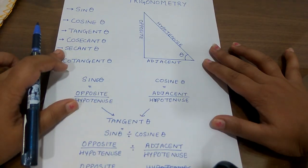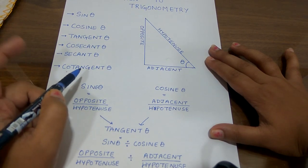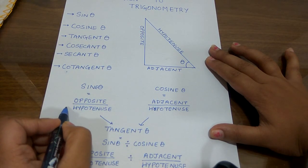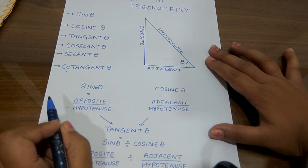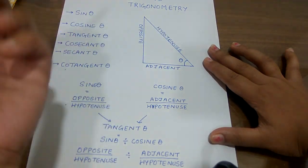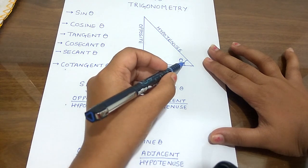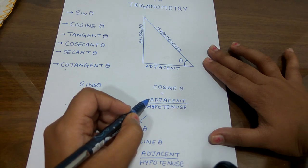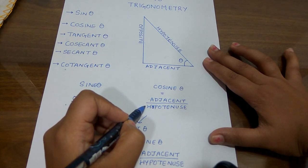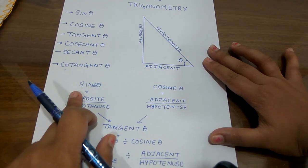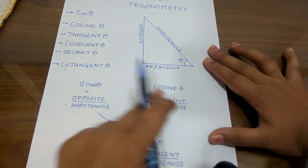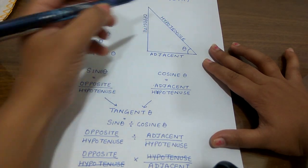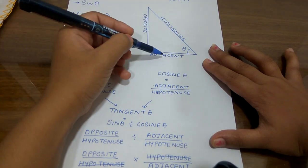First is sine theta. Sine theta is the measure of opposite upon hypotenuse — simply opposite upon hypotenuse. And cosine theta, which we call cos theta in short form, is the measure of adjacent upon hypotenuse. You just have to remember these two, because all the other ratios we can derive from them only. So sine theta is opposite upon hypotenuse and cos theta is adjacent upon hypotenuse.